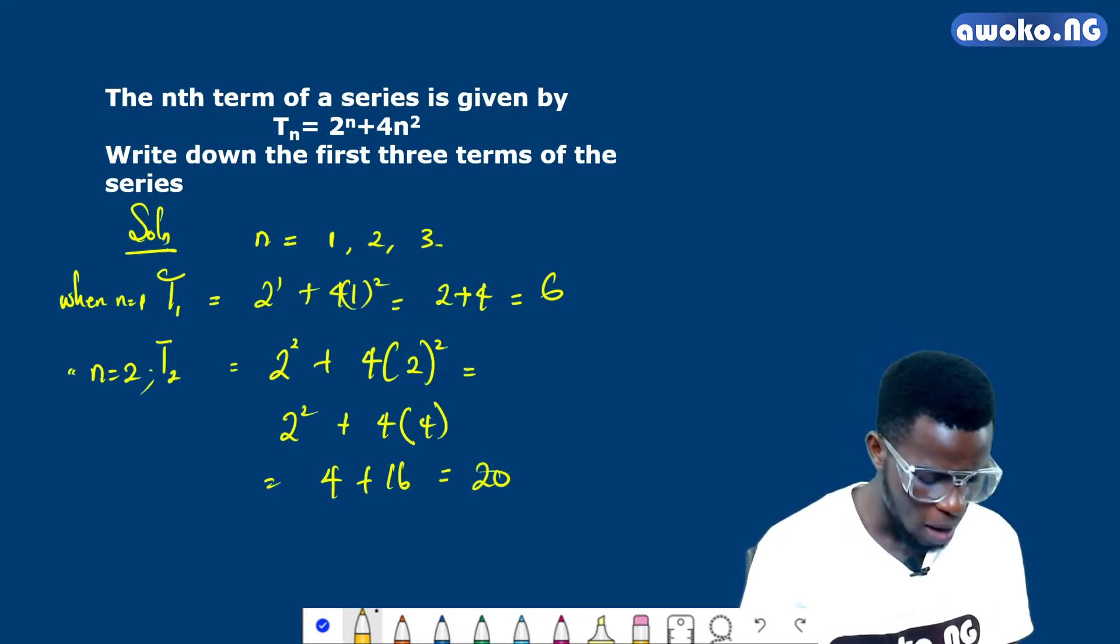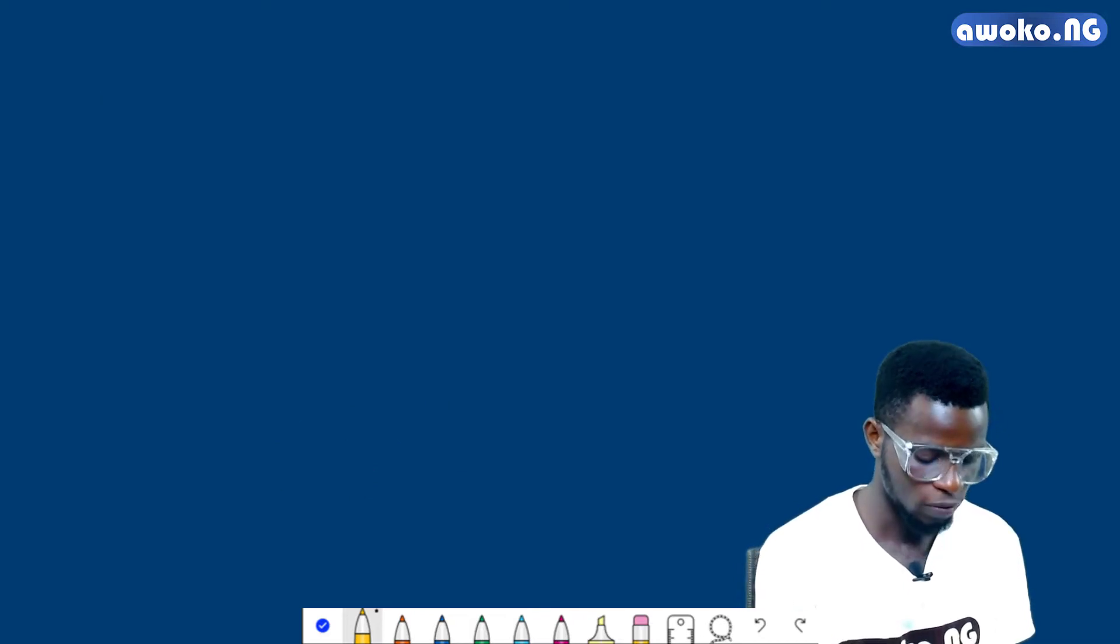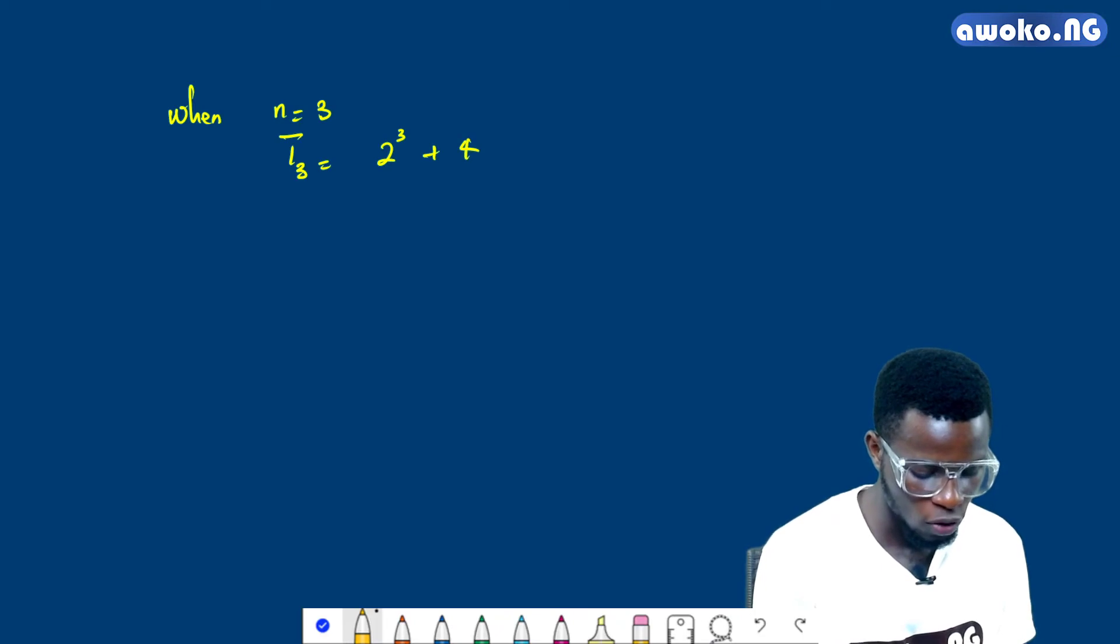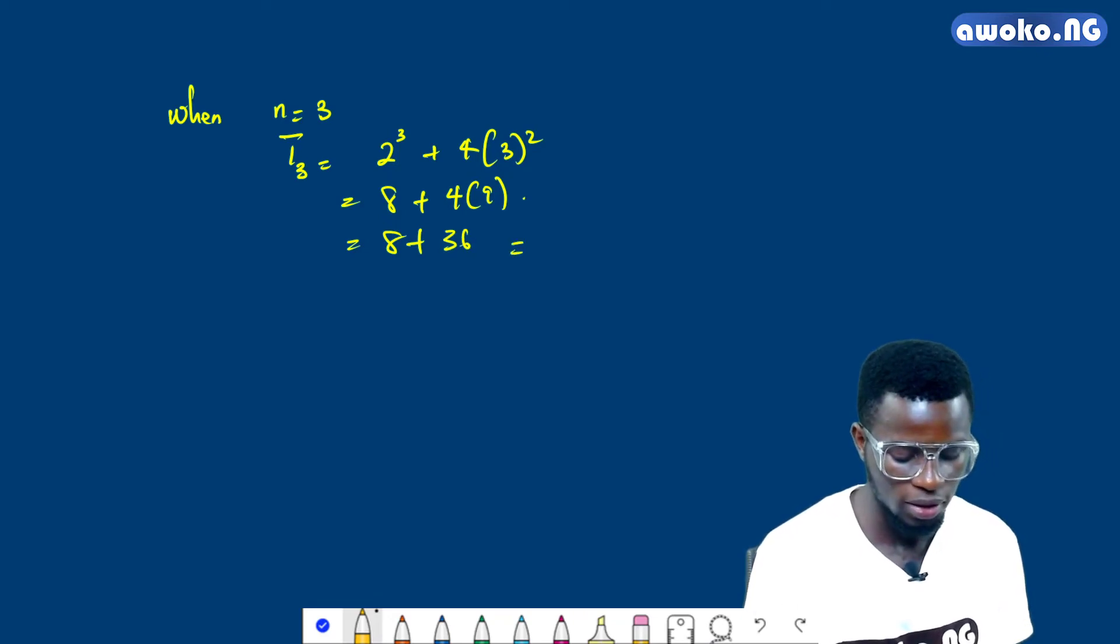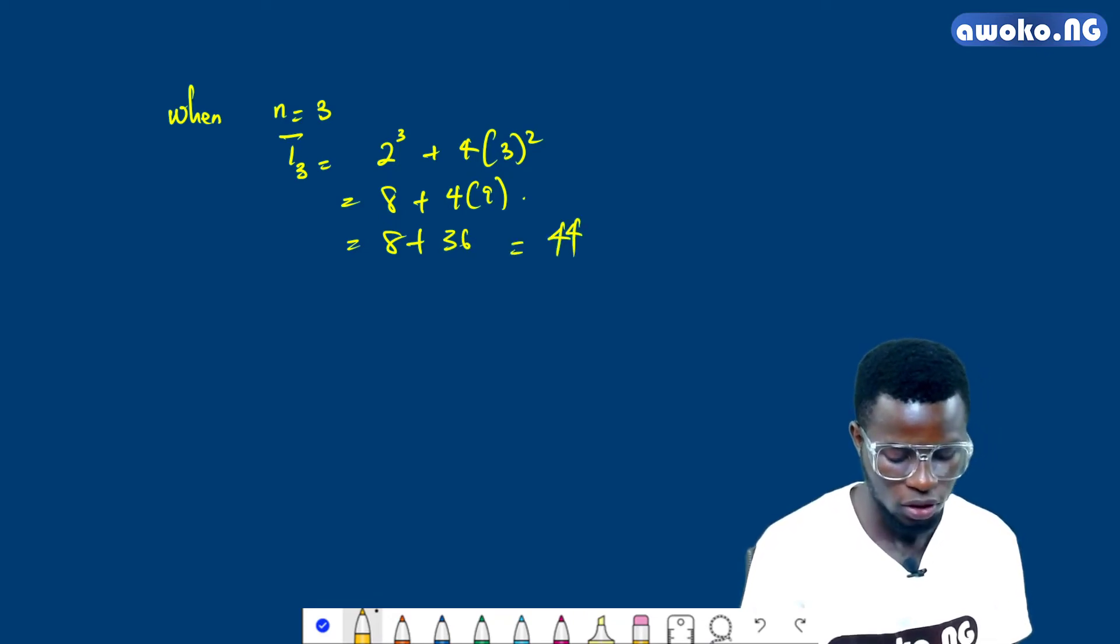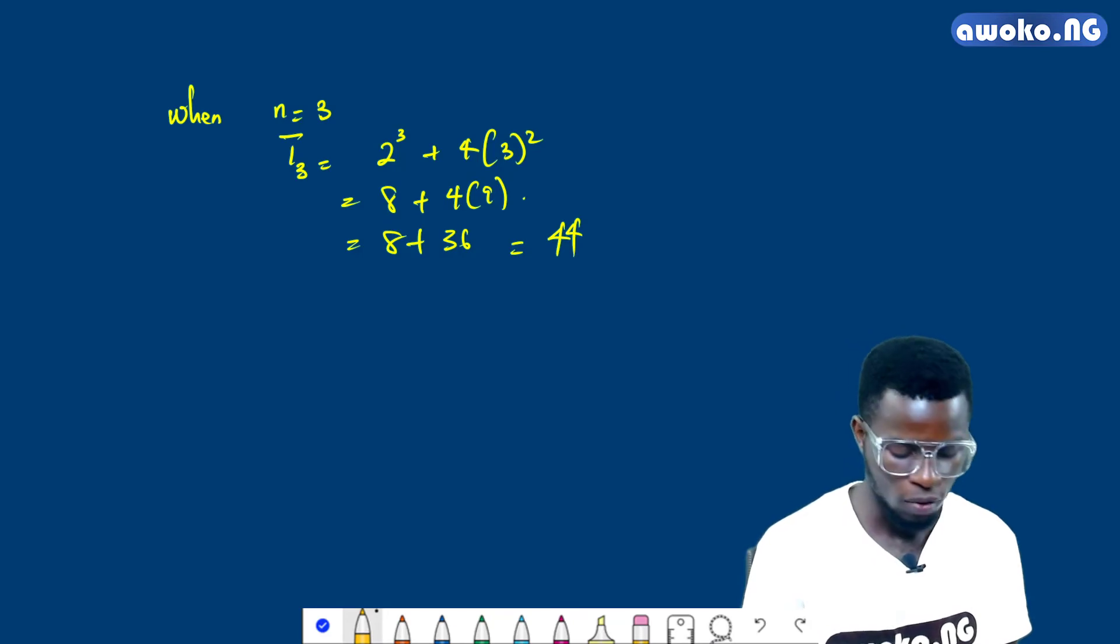So what happens when n equals 3? When n equals 3, T3 will be equal to 2 raised to the power of 3 plus 4 into 3 squared. And this is 8 plus 4 into 9. So this gives us 8 plus 4 times 9 is 36. So 8 plus 36 is, of course, equal to 44.